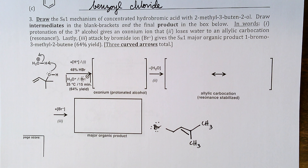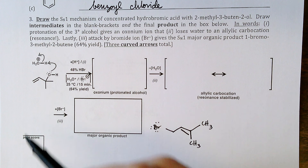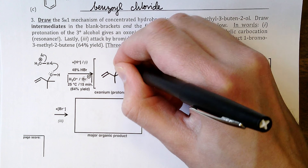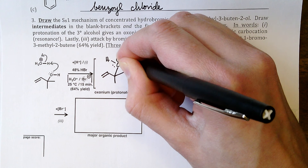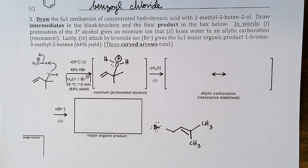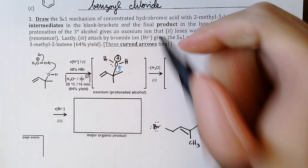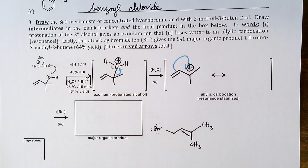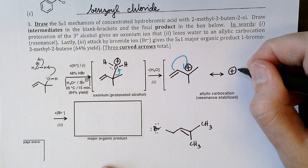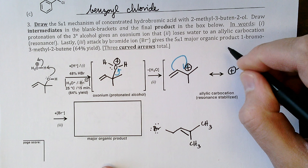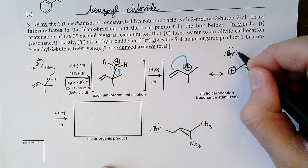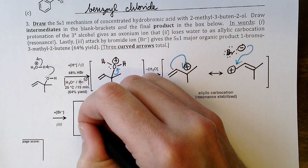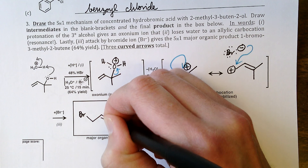Step one: protonation of the tertiary allylic alcohol. We show the protonated alcohol — an oxonium ion. Step two is loss of water, breaking the carbon-oxygen bond to give a tertiary allylic carbocation, which is resonance-stabilized. We can draw a resonance arrow showing a tertiary allylic carbocation and a primary allylic carbocation. The major organic product results as the kinetic product — bromide ion adds into the vacant 2p orbital of the primary allylic carbocation to give 1-bromo-3-methyl-2-butene in 64% yield.